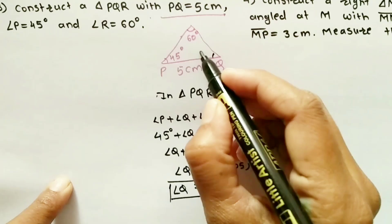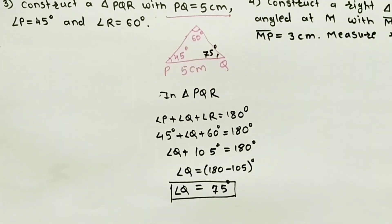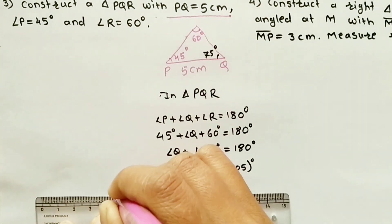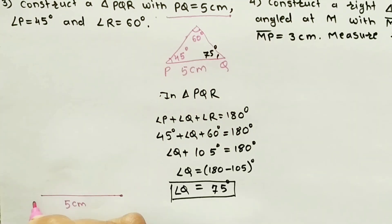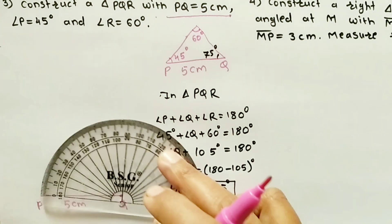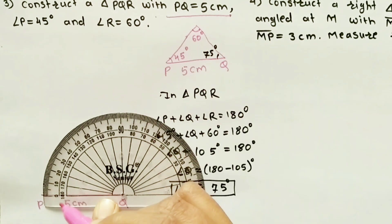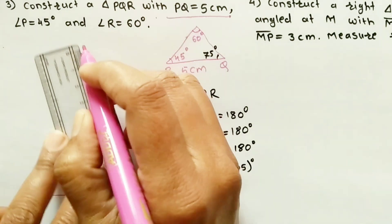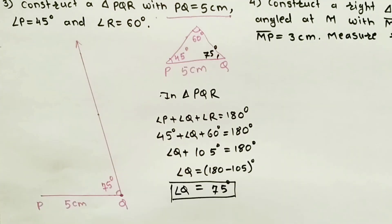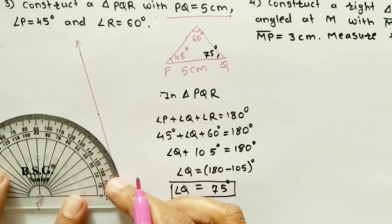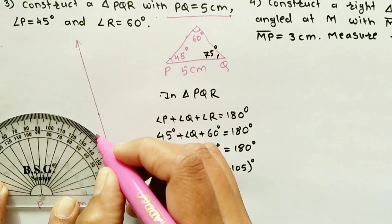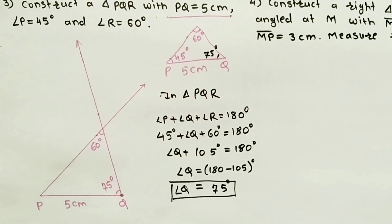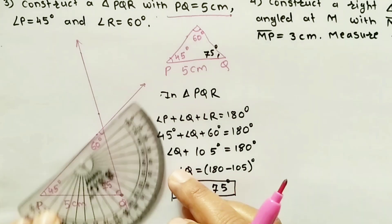Now that we have the base angles, first draw a 5 cm line segment. At point P, draw an angle of 45 degrees, and at point Q, draw an angle of 75 degrees. Mark 75 degrees and draw that angle. Also draw the 45 degree angle at P. The point of intersection will be point R.